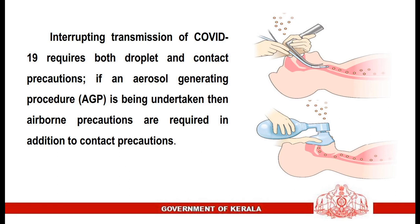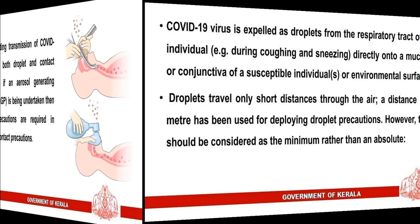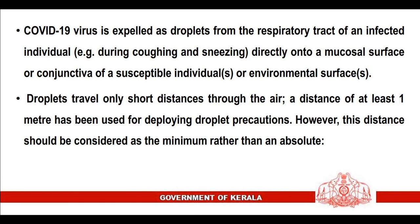Interrupting transmission of COVID-19 requires both droplet and contact precautions. If an aerosol-generating procedure is being undertaken, then airborne precautions are required in addition to contact precautions. COVID-19 virus is expelled as droplets from the respiratory tract of an infected individual, for example during coughing and sneezing, directly onto a mucosal surface or conjunctiva of a susceptible individual or onto environmental surfaces.